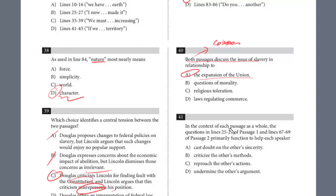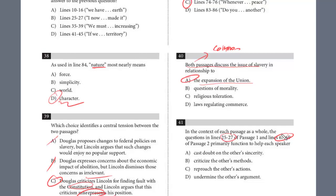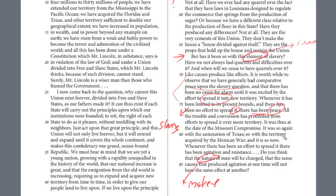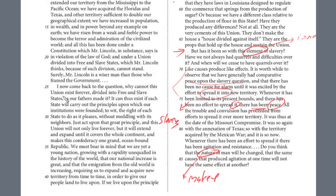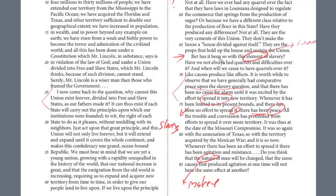The last one, number 41: in context of each passage as a whole, what's the function of the questions in lines 25 to 27 and lines 67 to 69? So we know this is a debate. Lines 25 to 27 are Douglas speaking, and 67 to 69 are Lincoln. At lines 25 to 27: 'Now I come back to the question, why cannot this union exist forever, divided into free and enslaved states as our fathers made it?' He's really debating Lincoln, saying why can't we just continue this? And at line 67, Lincoln says: 'But has it been so with this element — this factor of slavery — have we not always had quarrels and difficulties over it? When will we cease to have quarrels over it? Like causes produce like effects.' Both are sort of rhetorical questions they're asking as they debate each other.